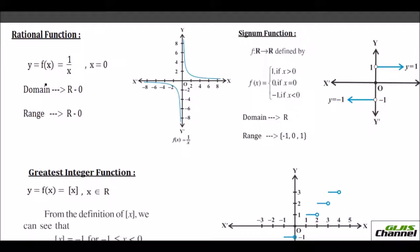You have yet another function called the rational function, which is written as f of x over g of x, where g of x is never 0. Here y equals f of x equals 1 over x, where x is not equal to 0 — the denominator is never 0. So both the domain and range are real numbers except 0. Since x can never be 0, you are not going to touch the origin at all. The graph turns and curves as it comes closer to 0.